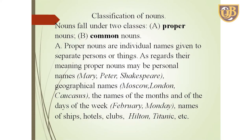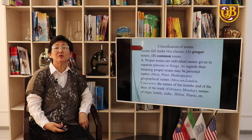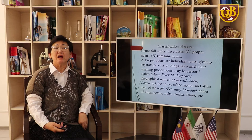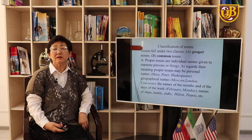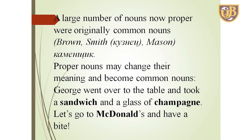Classifications of nouns. All nouns fall into two classes: proper nouns and common nouns. Proper nouns are individual names given to separate persons or things. They may be personal names — Mary, Peter, Shakespeare; geographical names — Moscow, London, Caucasus; names of the months and days of the week — February, Monday; and names of ships, hotels, and clubs — Titanic, Hotel Hilton, Manhattan. A large number of nouns now proper were, at some earlier period, common nouns.